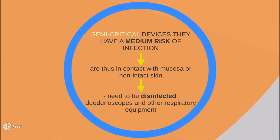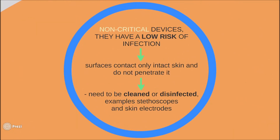Semi-critical devices are those in contact with mucosa or non-intact skin and have a medium risk of infection, so they need to be disinfected. Examples include duodenoscopes, endotracheal tubes, bronchoscopes, laryngoscope blades, and other respiratory equipment. Non-critical devices are those whose surfaces contact only intact skin and do not penetrate it — they have a low risk of infection but need to be cleaned or disinfected. Examples include blood pressure cuffs, stethoscopes, and skin electrodes.